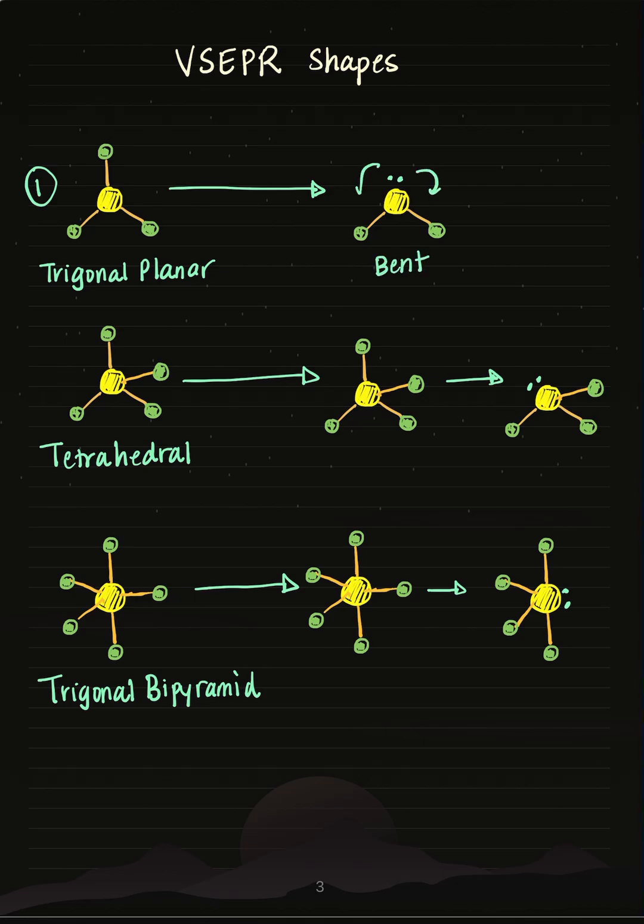That's because of valence shell electron pair repulsions, but more about that in another video. If we do the same thing for the tetrahedral, let's take away a bond. When I do that I leave a lone pair, notice the shape changes from a tetrahedral to a trigonal pyramid, or pyramidal.